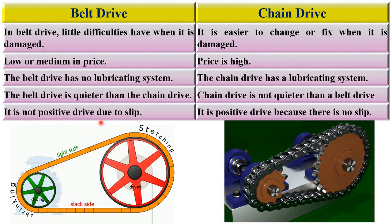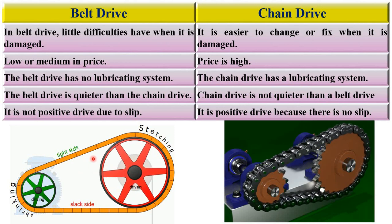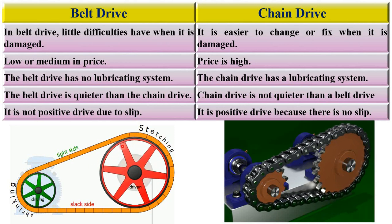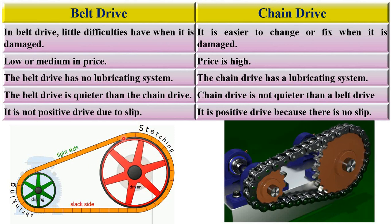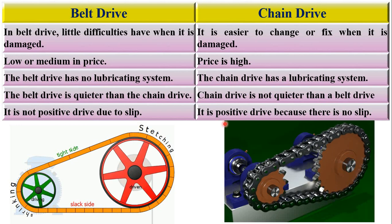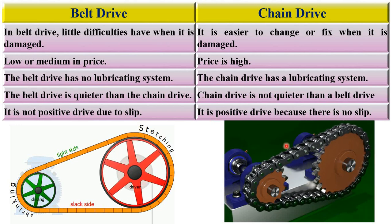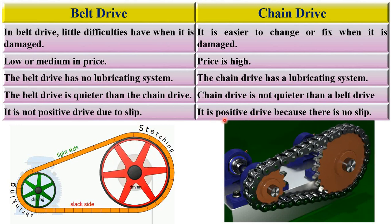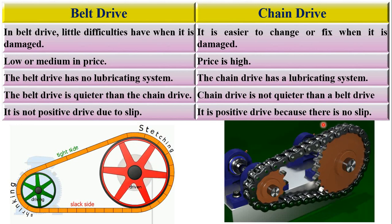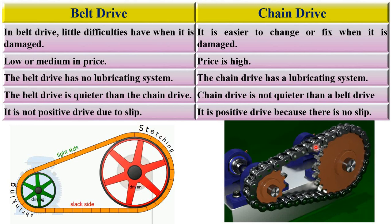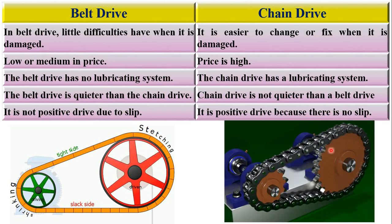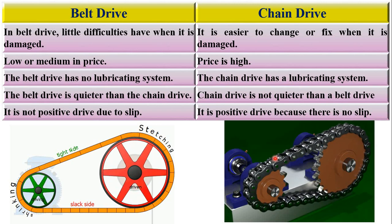Belt drive is not a positive drive due to the slip between the belt and pulley. In the case of chain drive, it is a positive drive because there is no slip between the chain and the sprocket.